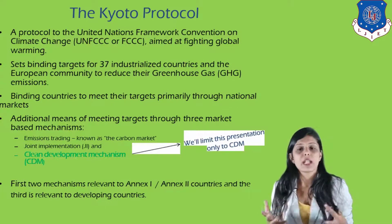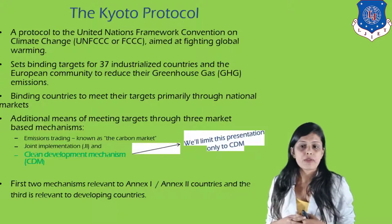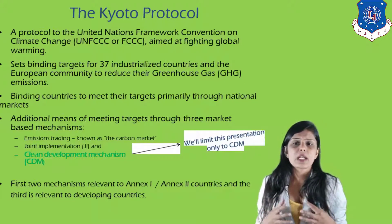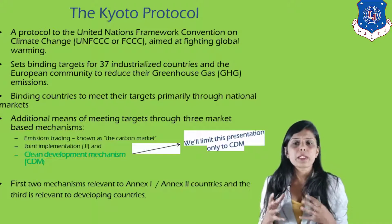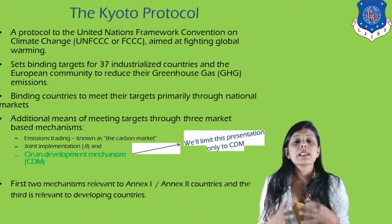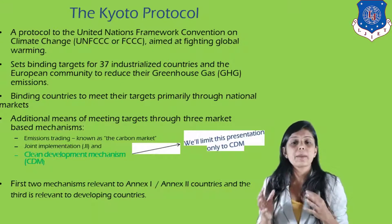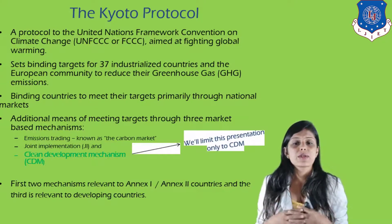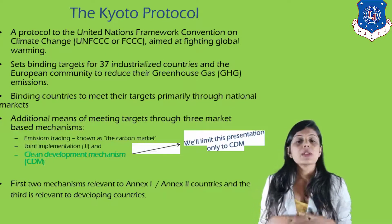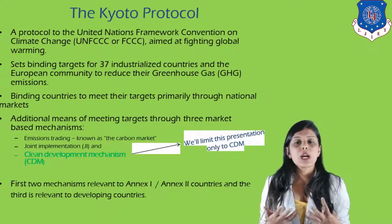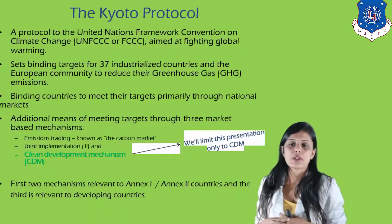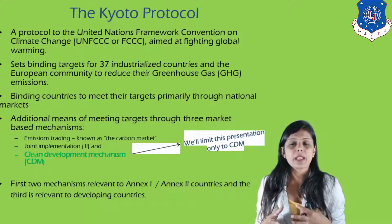There are several effects of climate change in our surroundings. A protocol to the United Nations Framework Convention on Climate Change (UNFCCC) aimed at fighting global warming sets binding targets for 37 industrialized countries and the European community to reduce their greenhouse gas emissions — gases like carbon dioxide, nitrogen oxides, methane, and CFCs — which absorb heat and increase Earth's temperature, resulting in rising sea levels, floods, and other harmful conditions. Countries are bound to meet these targets through national markets and three market-based mechanisms.